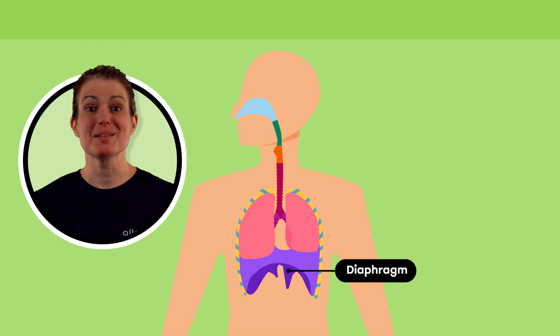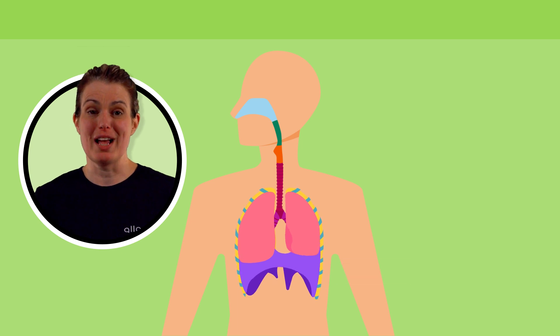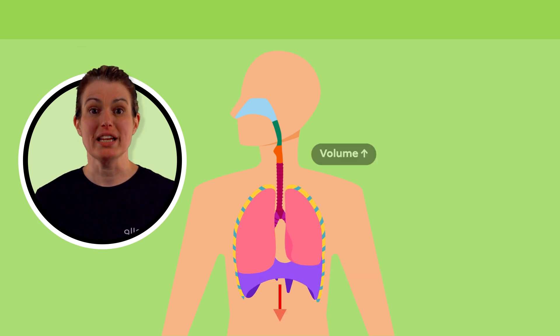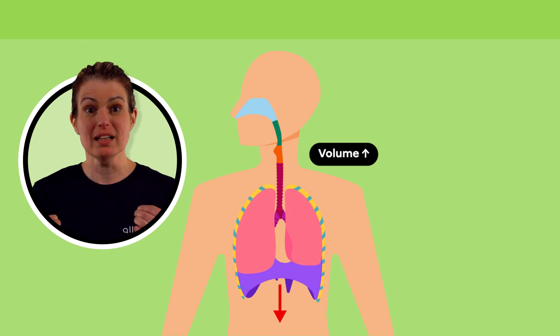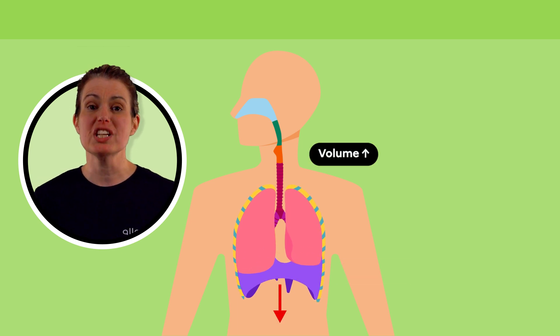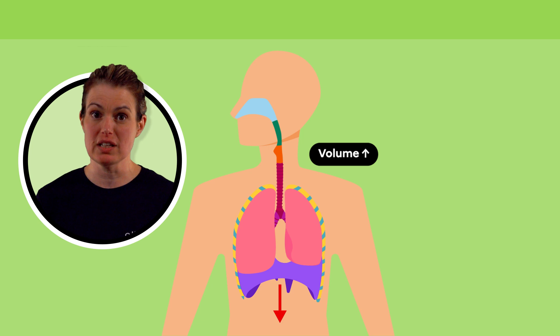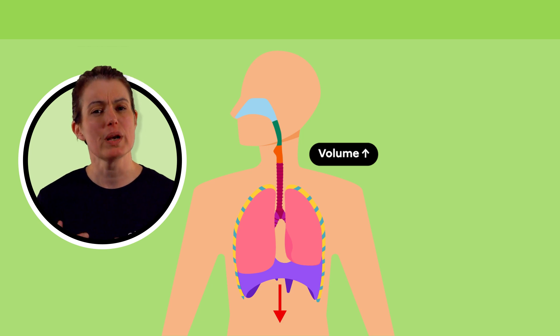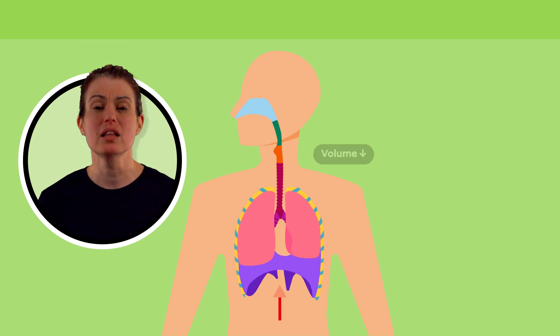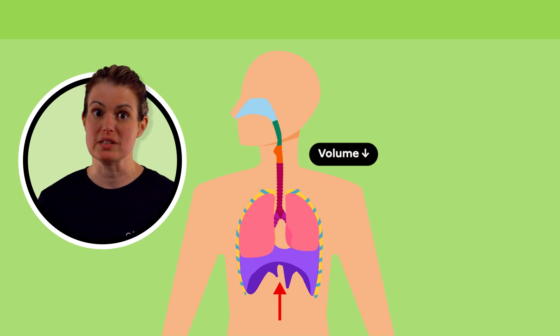The diaphragm is the muscle under the lungs. When it contracts, it lowers, which increases the volume of the chest cavity. When it relaxes, the volume decreases.